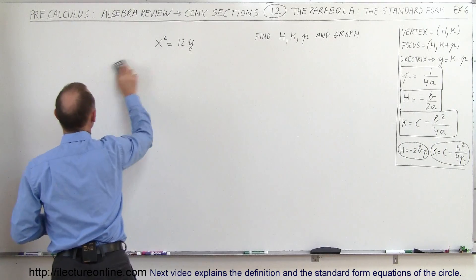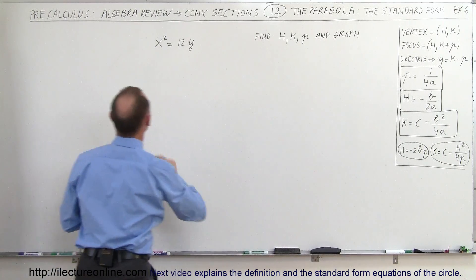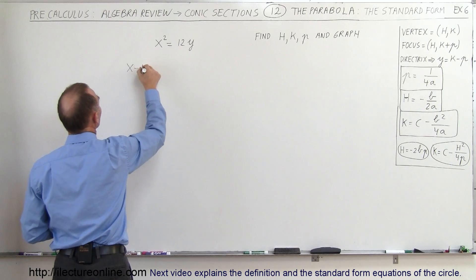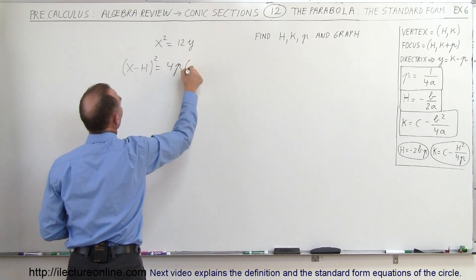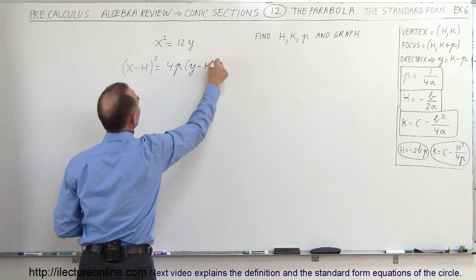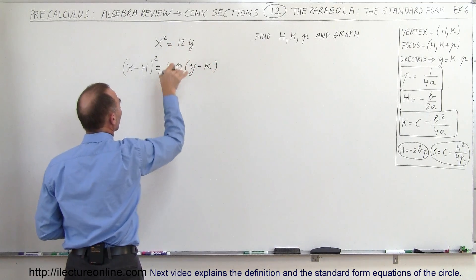Well, you know that the standard form is going to look like this: the standard form will look like (x - h)² equals 4p times (y - k). So we need to make this look like that.